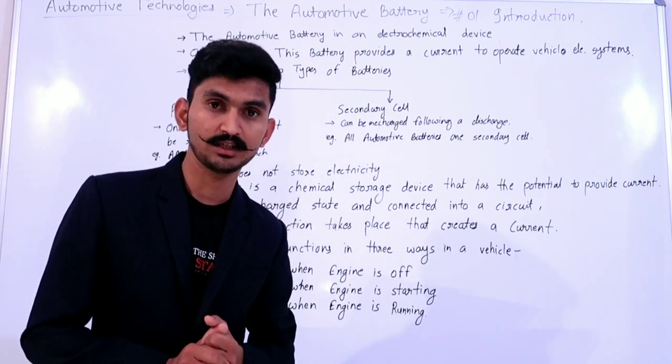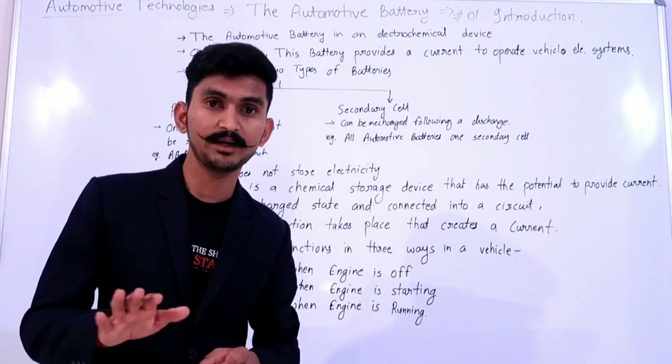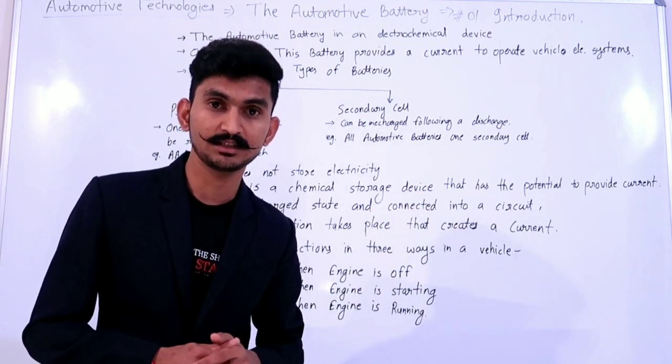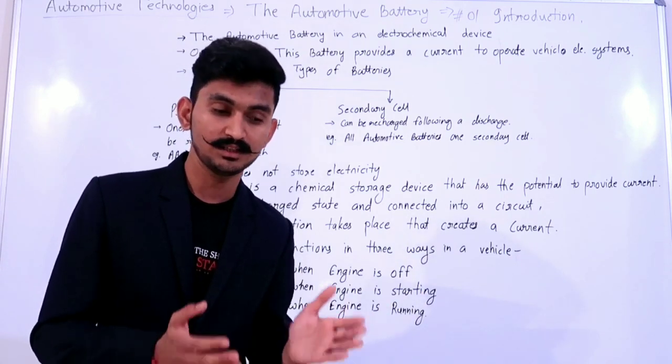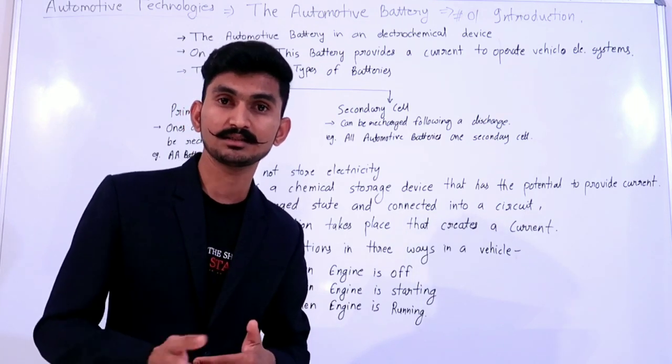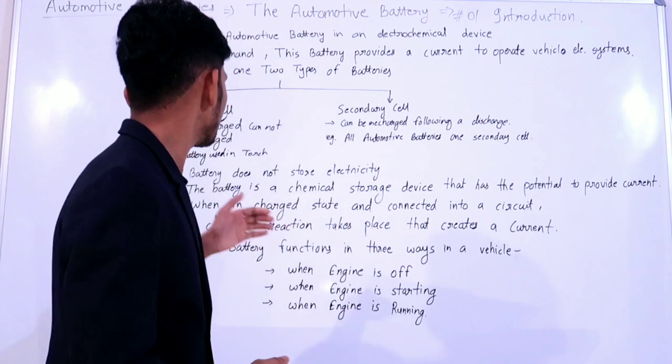These are primary cell batteries. But in automobiles, all batteries are secondary cell batteries because they can be recharged following a discharge. After discharge, you can recharge it again. That's why they are secondary cell batteries.